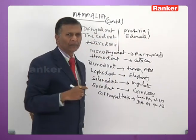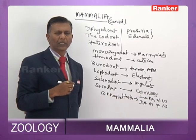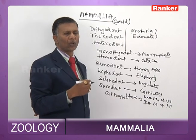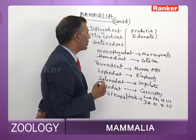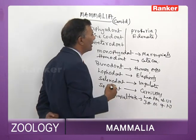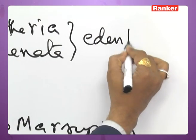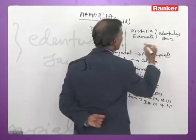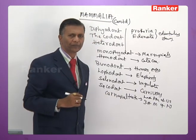Edentata includes anteaters like sloths. In Prototheria and Edentata, teeth are absent — that is, adentulous jaws are present.